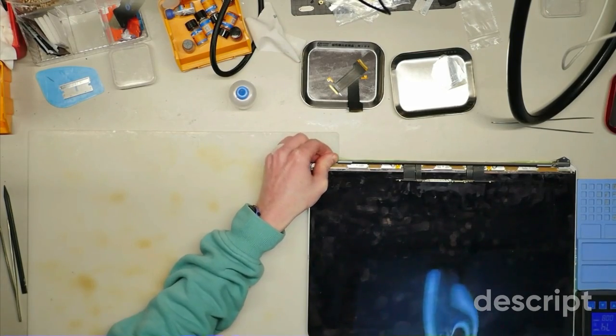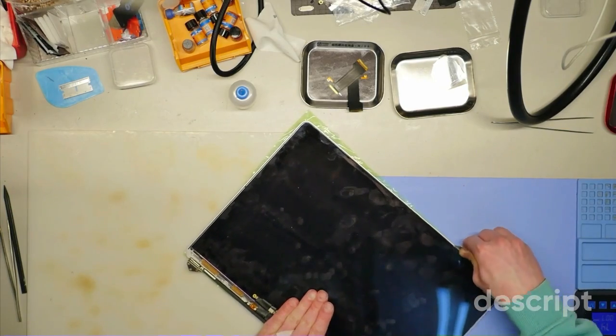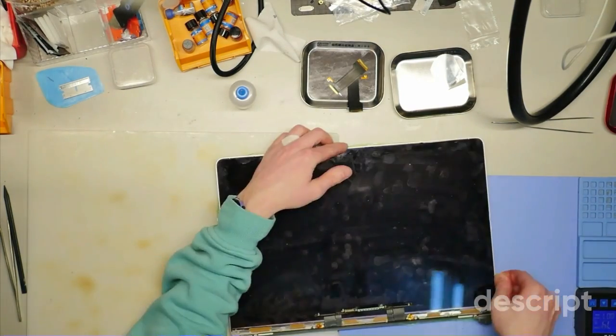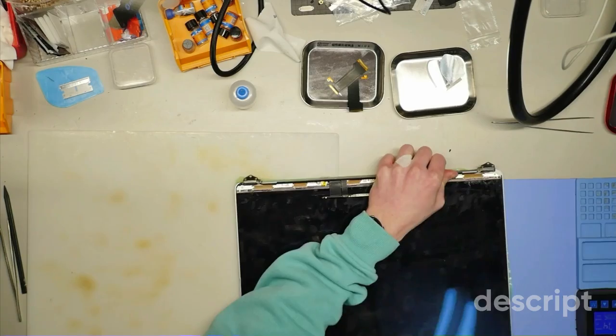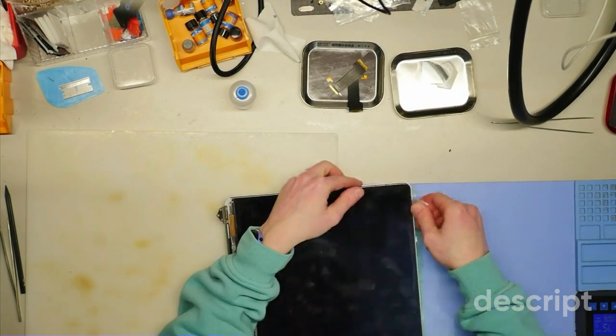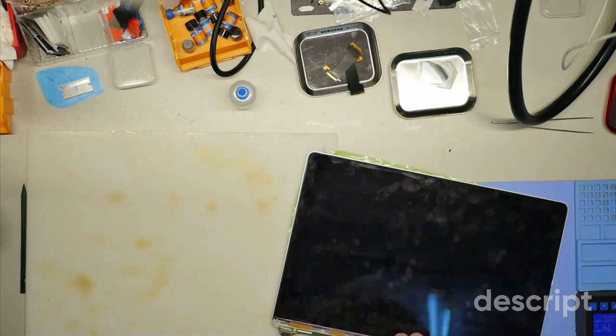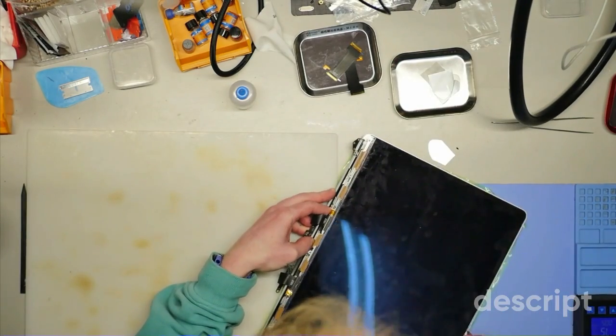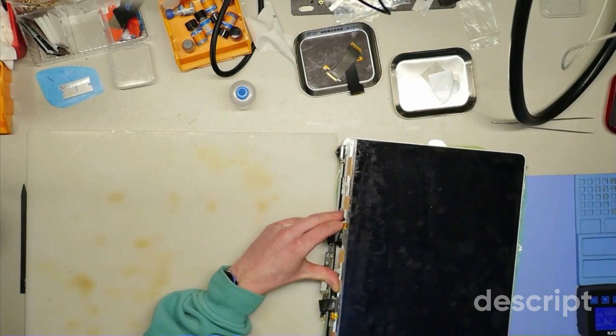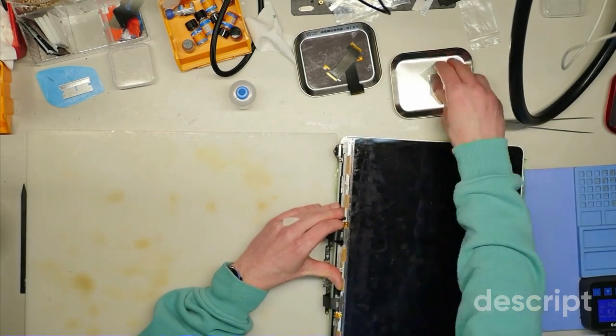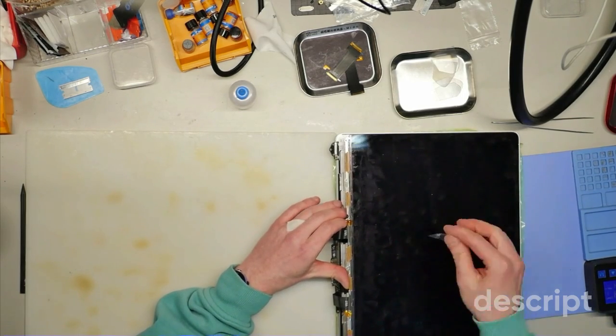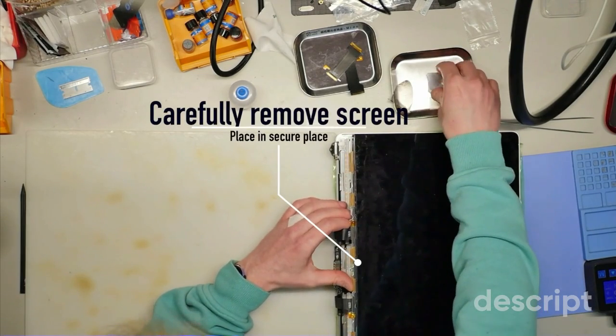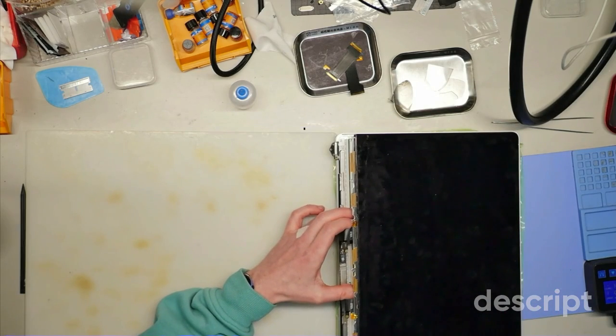Once you're done you'll be able to remove it without any damage to the screen. It's really important not to rush it, and sometimes you just need to put some pressure and wait until it disconnects the glue. That's basically the most dangerous part of the process. If you figure it out, then there will be no problem at all to fix the screens.